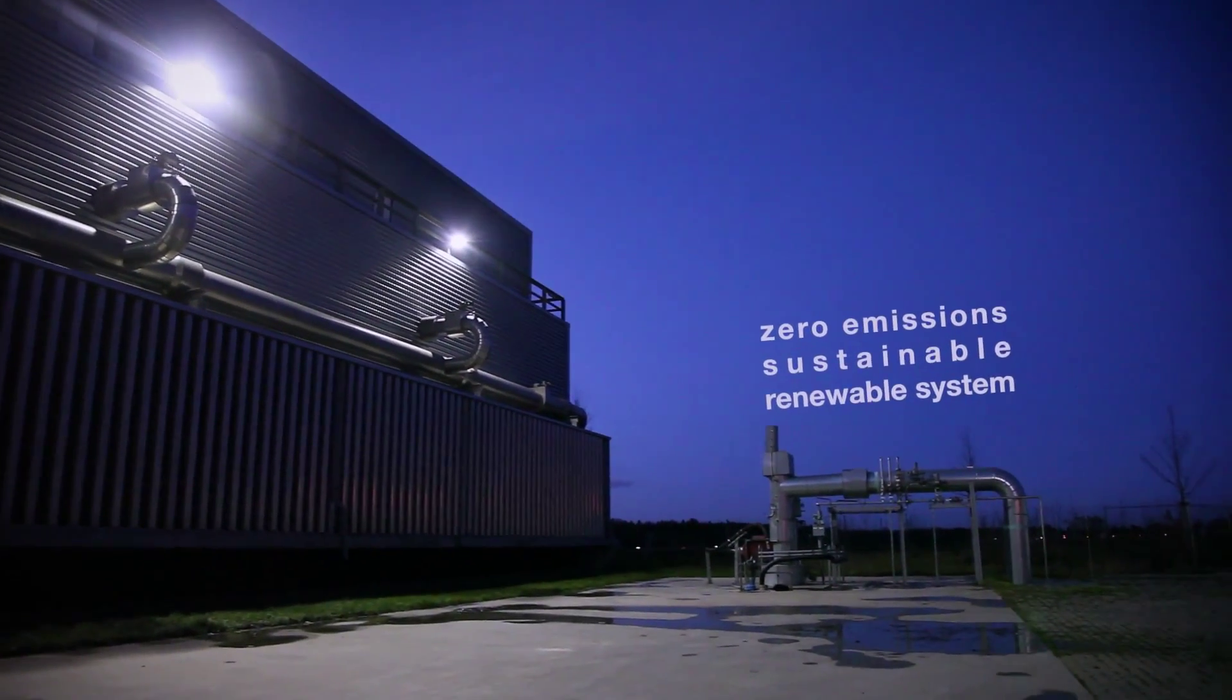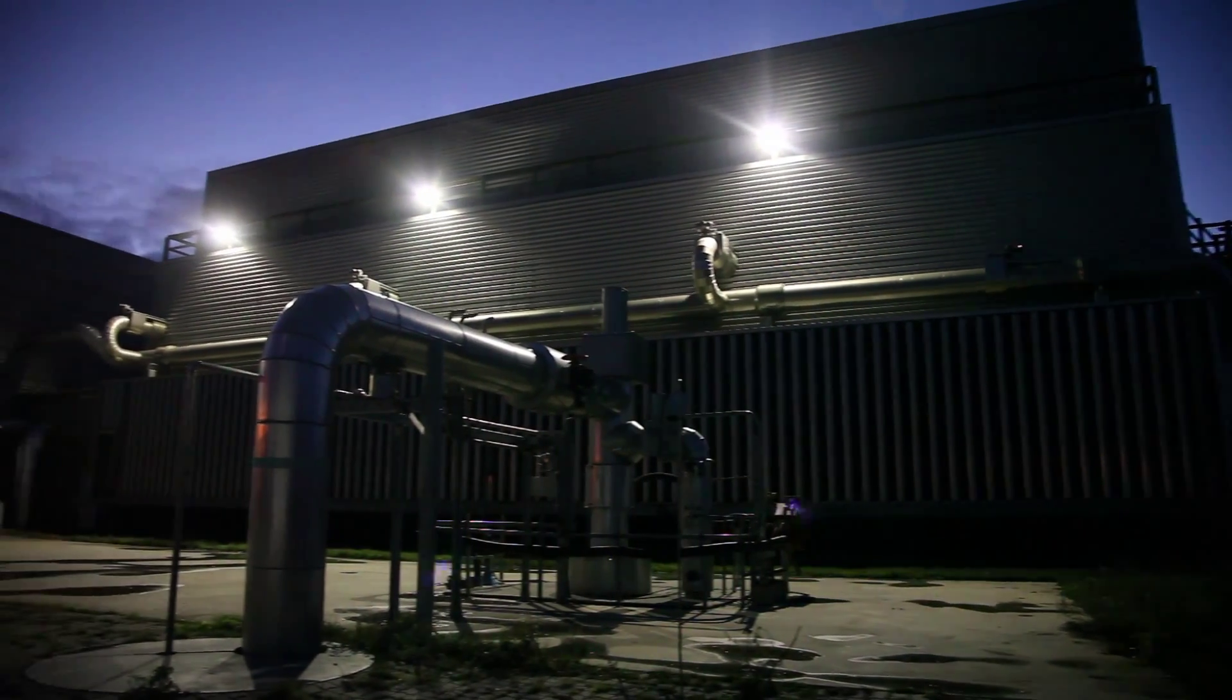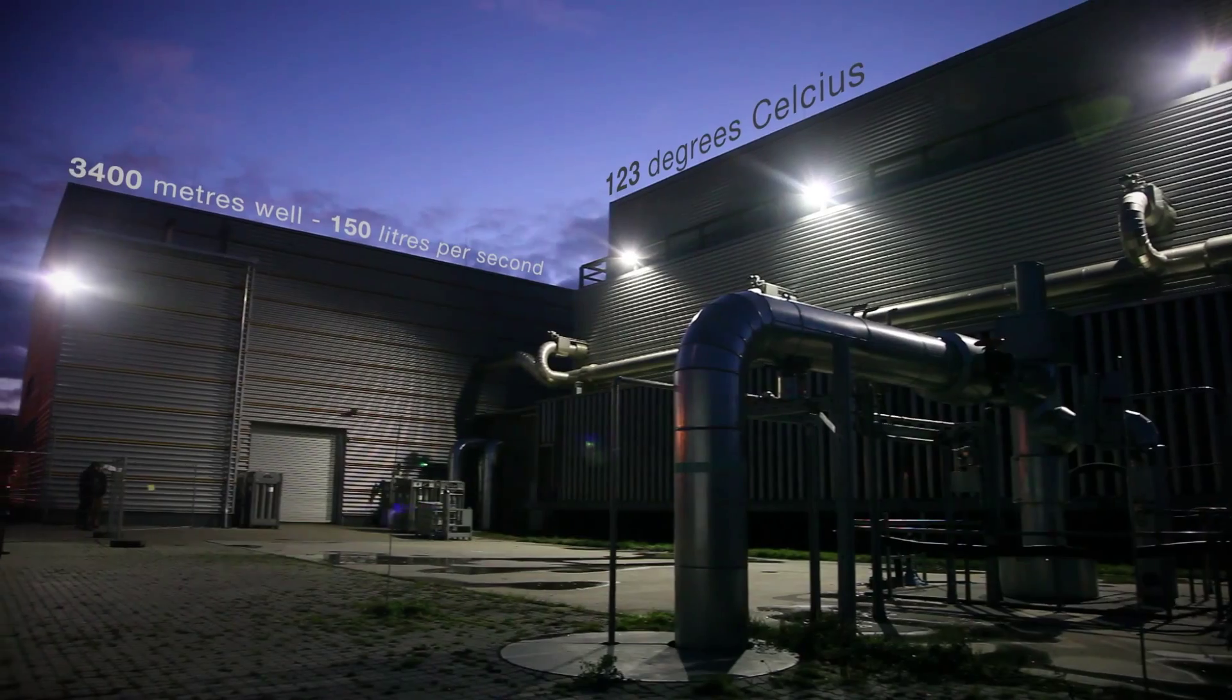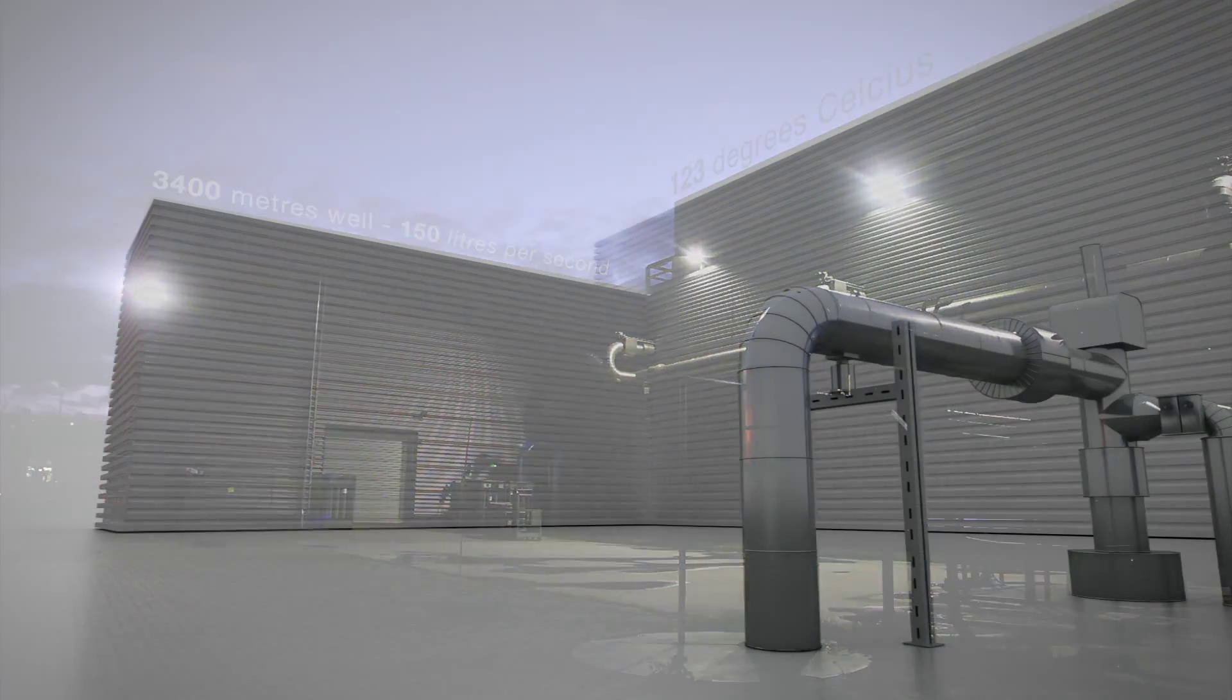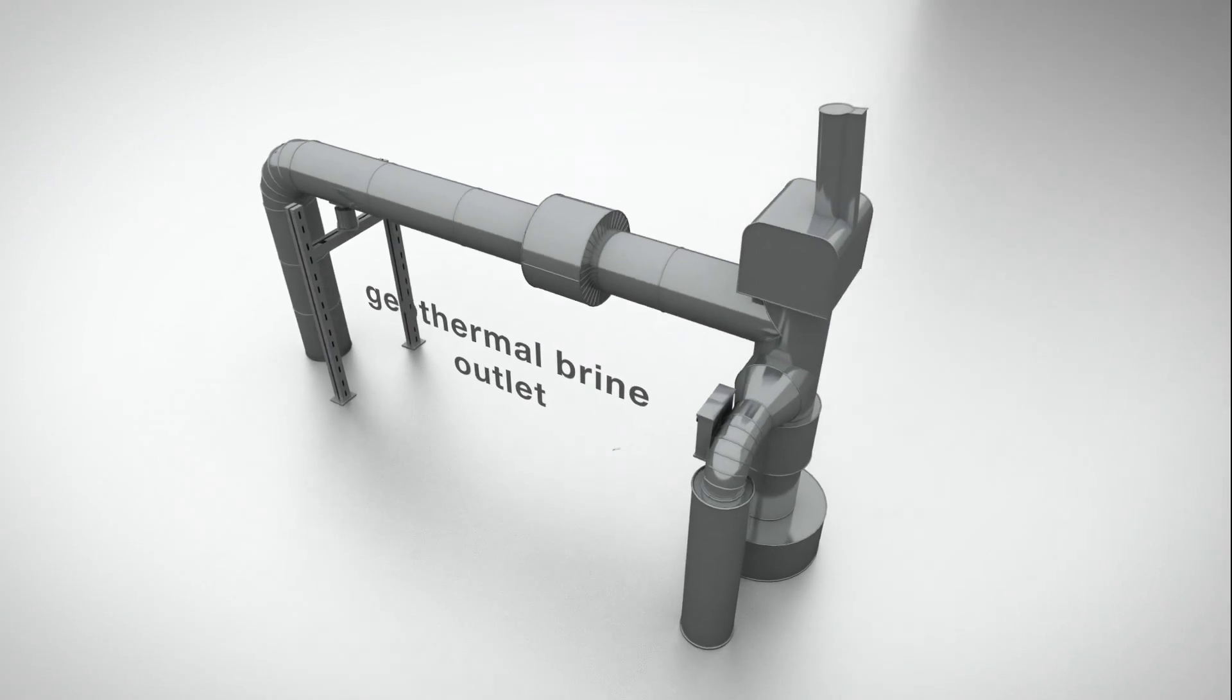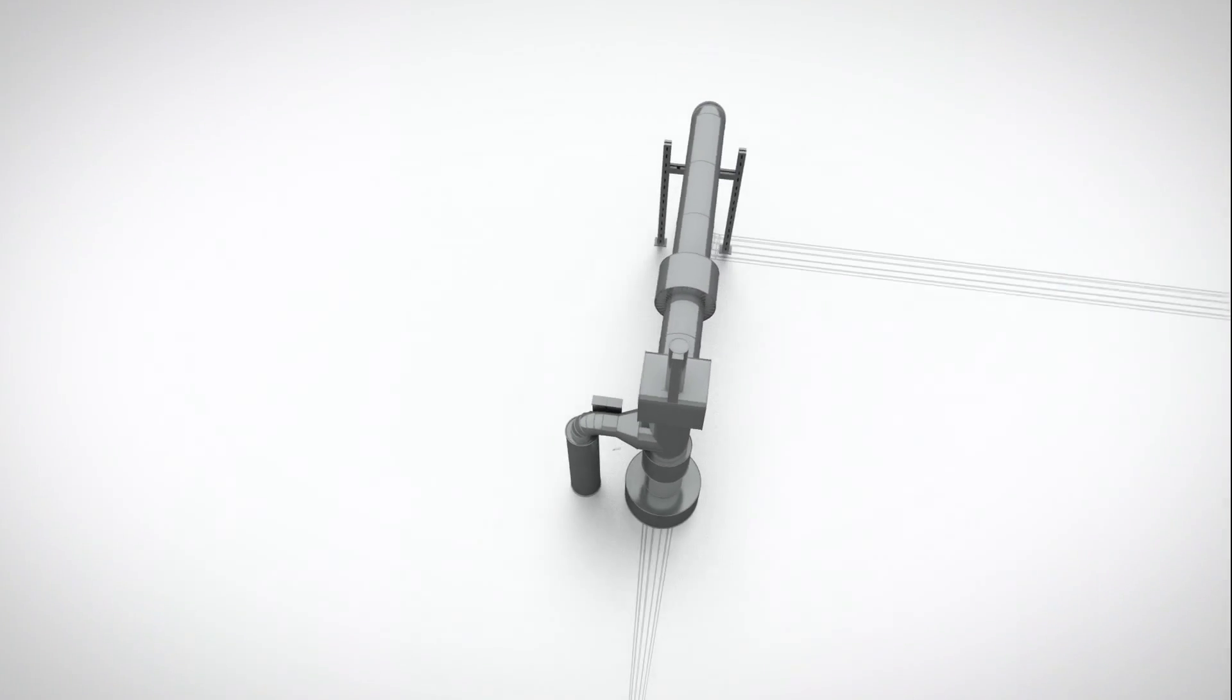In 2004, Geotherme Unterhaken, the plant's developers, drilled a 3,400-meter well to tap into a hot aquifer providing 150 liters per second of 123 degrees Celsius water called geothermal brine for the plant.